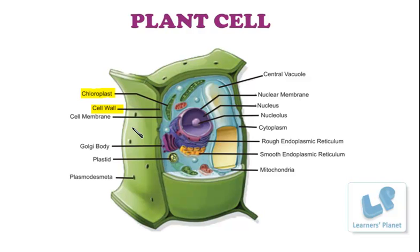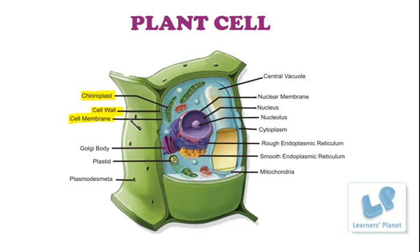Below the cell wall, another membrane is present which is known as the cell membrane. You can see it is highlighted here. You can label it either cell membrane or plasma membrane — both answers are correct. The function of the cell membrane is to maintain the selective transport of materials in and out of the cell, and it also serves as a protective barrier between the inner and outer environment of the cell.